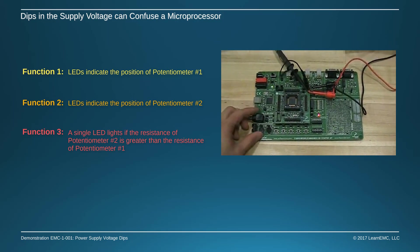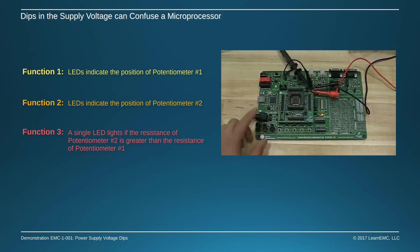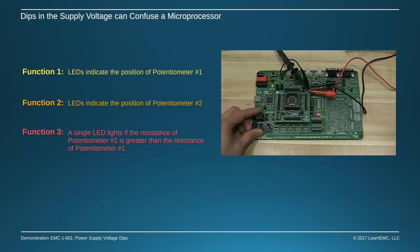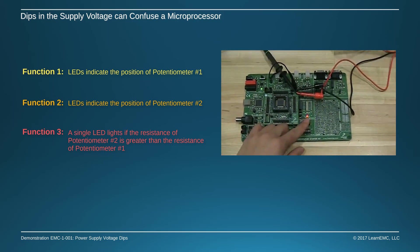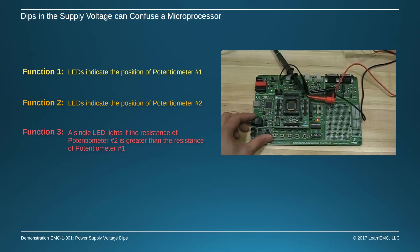Pressing button number 3 causes the microcontroller to compare the positions of the two potentiometers. If the resistance of the potentiometer on the left is higher, the LED will light up. If the potentiometer on the right has the higher resistance, the LED doesn't light.